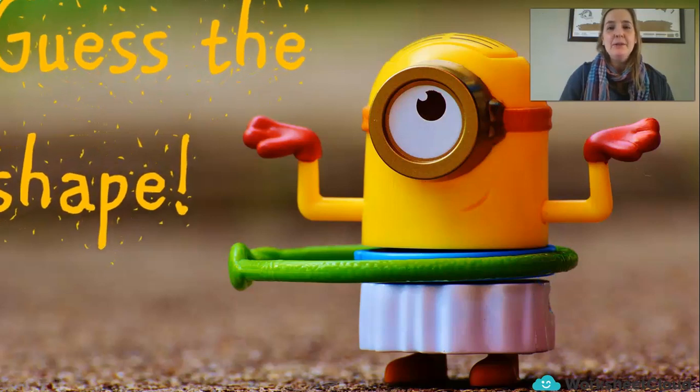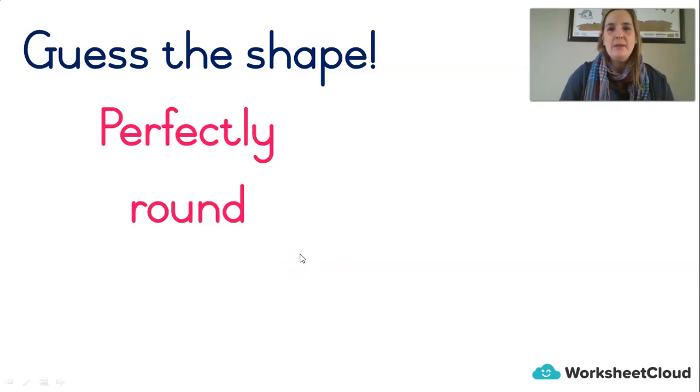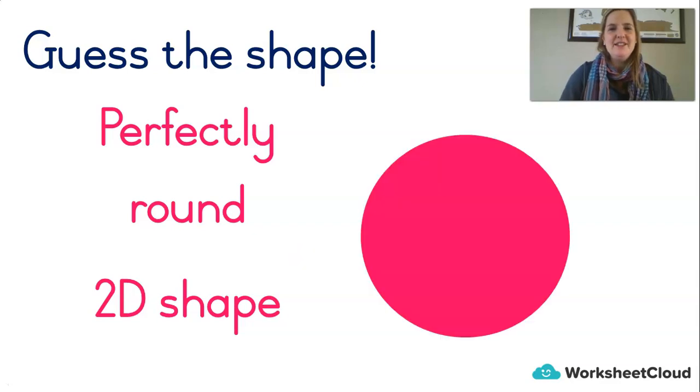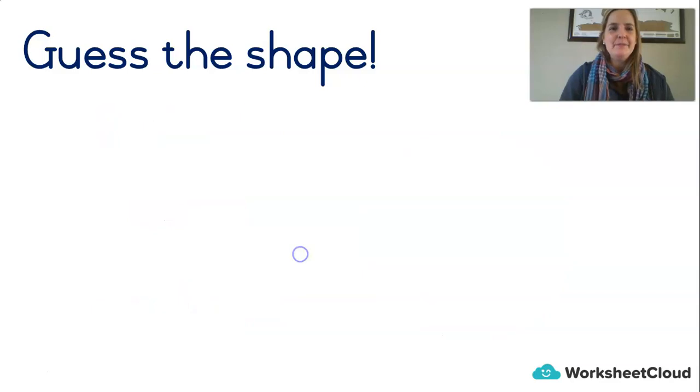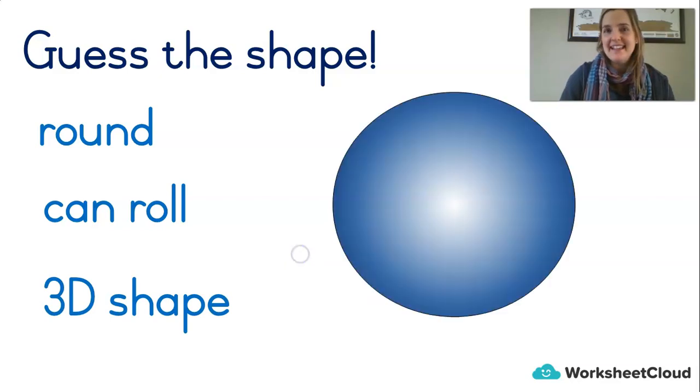We're going to play a game called guess the shape to end off this lesson. And I'm going to explain a shape to you and then you try, guess what it is. Are you ready? This shape is perfectly round and it's a 2D shape. What is it? So cool. Did you get it? Let's try another one. This shape is round. It can roll and it's a 3D shape. What is it? A sphere. Good. If you said a ball shape, that's fine. You're absolutely right.